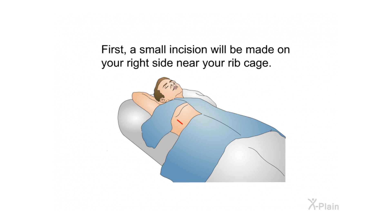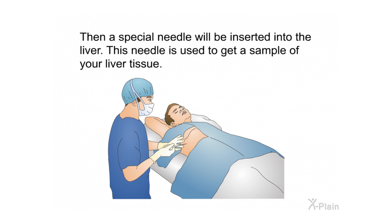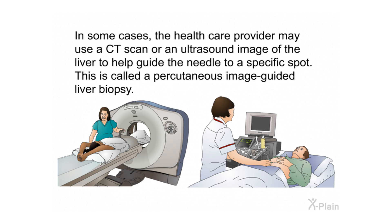First, a small incision will be made on your right side near your rib cage. Then a special needle will be inserted into the liver to get a sample of your liver tissue. In some cases, the health care provider may use a CT scan or an ultrasound image of the liver to help guide the needle to a specific spot — this is called a percutaneous image-guided liver biopsy.